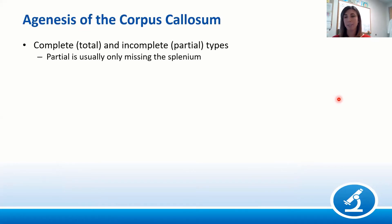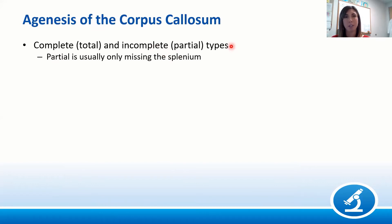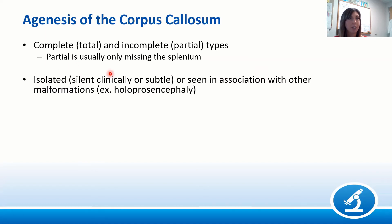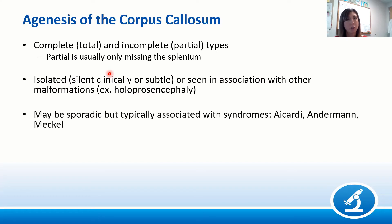Let's move on to agenesis of the corpus callosum. Like holoprosencephaly, this is a phenotypic spectrum — you can have total agenesis (complete) or partial/incomplete agenesis, where typically the more posterior portion — the splenium — is missing. The majority of cases have other CNS malformations. Agenesis of the corpus callosum can be sporadic but is also associated with syndromes like Aicardi, Andermann, and Meckel.